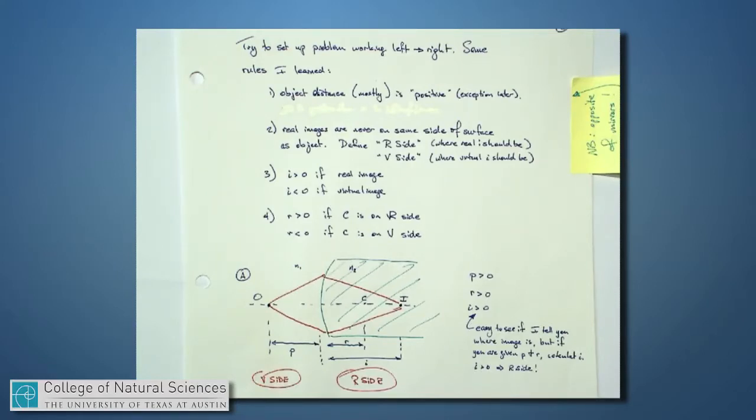So here's the sign convention for refracting surfaces, and here's a warning. It is the exact opposite of mirrors. If I place an object over here, and the light is now going into a refracting surface, p is what's called the object distance.